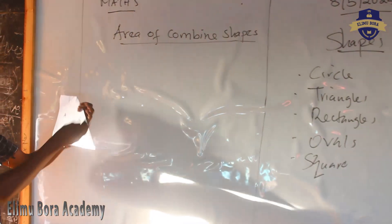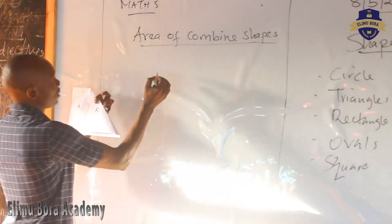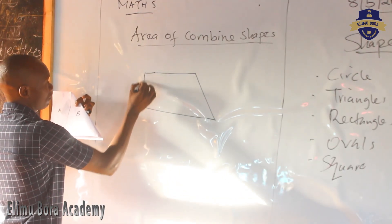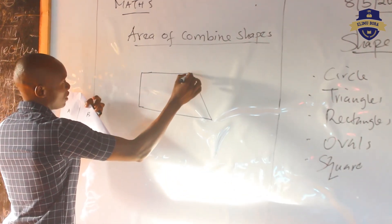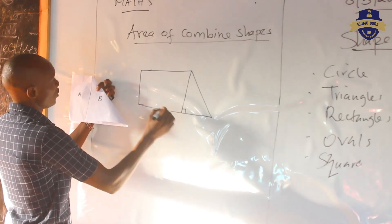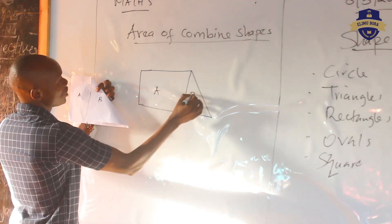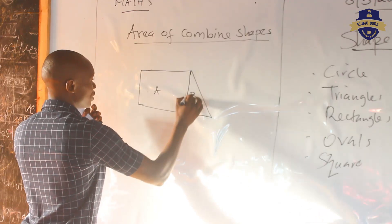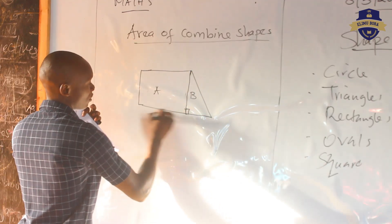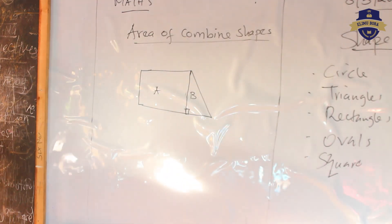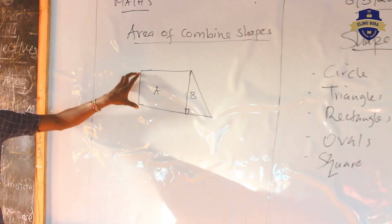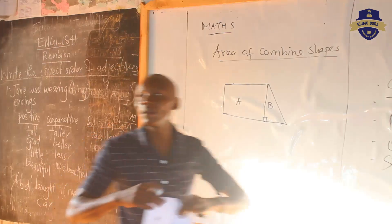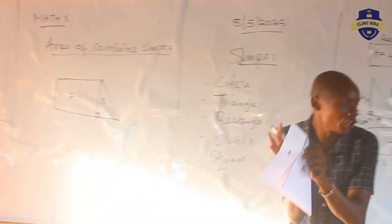Let's look at this. In this case, it is something that looks like this. So, this is shape A and this is shape B. Let's make it straight, because it's a right-angled triangle. So, this is what we call a combined shape. Combined means one thing joined together.